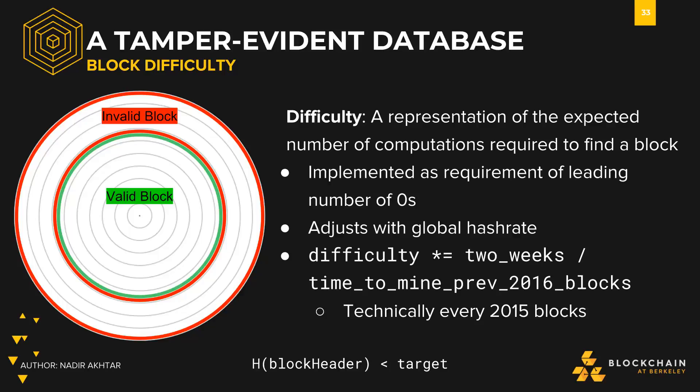As the number of zeros increases, so will the difficulty, and vice versa. This difficulty adjusts with the global hash rate. We know that the amount of computational power in the network will always be changing as miners join and leave the network. But we want to maintain a block time of 10 minutes. For this reason, we have to raise and lower the difficulty alongside the hash power growth and decay of the network.